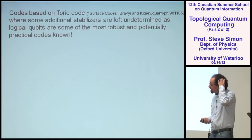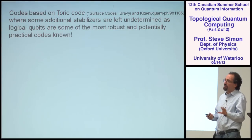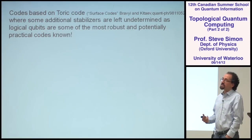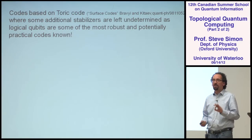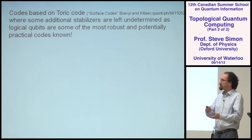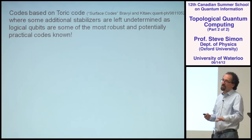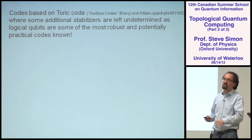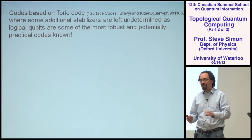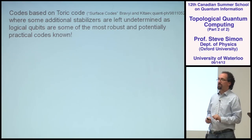The codes based on this — things called surface codes, which are basically the Toric Code with some minor bells and whistles added on — are, as far as I know, the best codes as far as being robust against errors. They have a threshold for errors in the percent range, as compared to old error correcting codes which have thresholds way down in the very small fraction of a percent range. So when people actually get around to building a quantum computer, there are going to be some errors, and they'll probably use these types of error correcting codes to keep their quantum information protected.